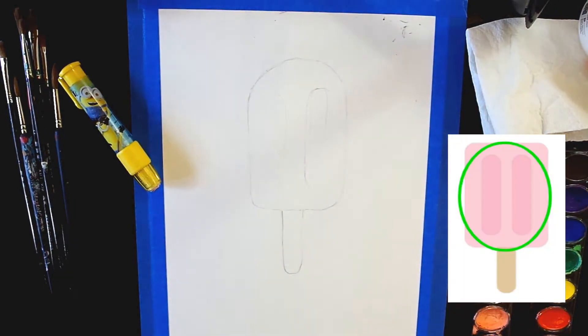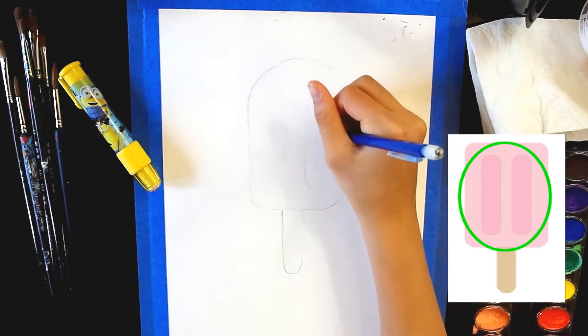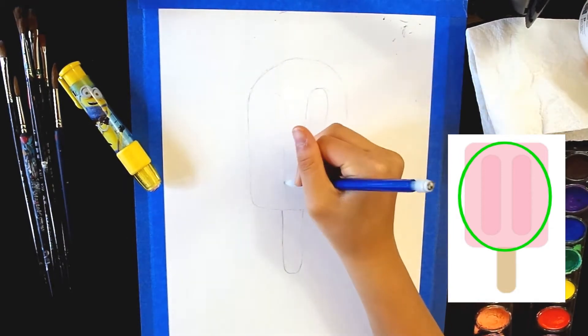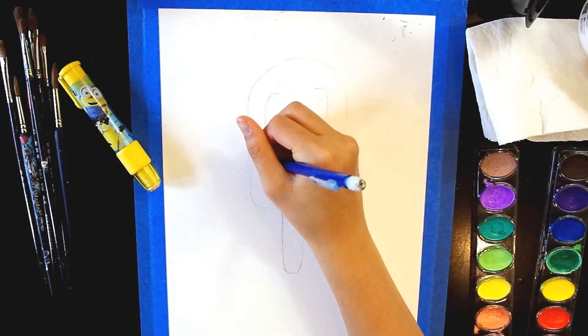Next, draw two elongated oval shapes in the center of the popsicle. The ovals are pictured in the corner. Be sure the ovals are spaced evenly.